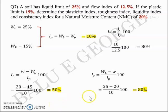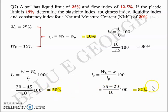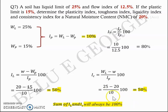This confirms the idea mentioned earlier: IL plus IC will always give 100% or 1 in integer terms.